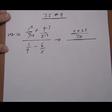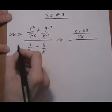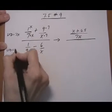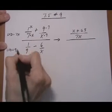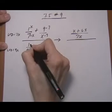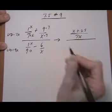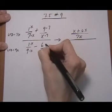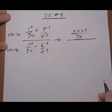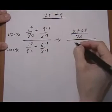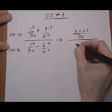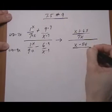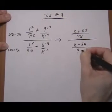Now the bottom — the LCD is different, it's 9x. So we do times x on the first one and times 9 on the second one, and that turns the bottom fractions into x minus 54 all over 9x.